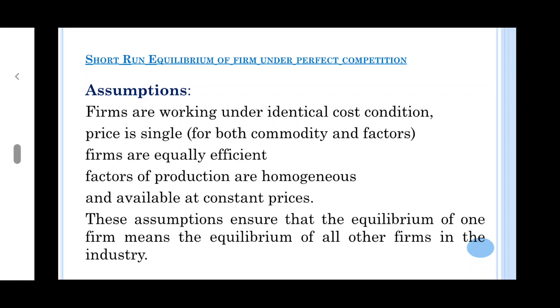Price for all commodities will be the same and single. Then price of factors of production will also be the same. All factors of production, raw materials, and inputs will be available to all firms at the same price.